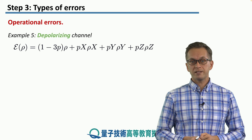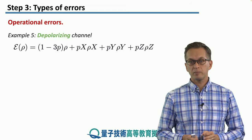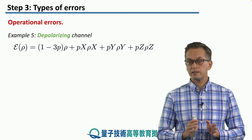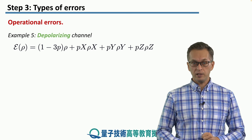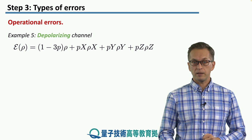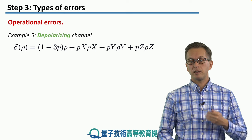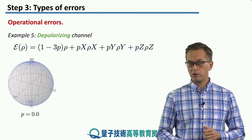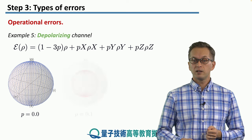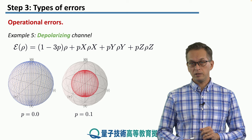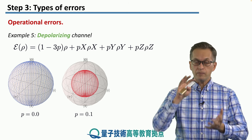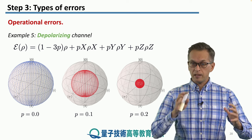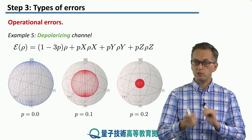For our fifth example, let's consider the depolarizing channel, which is particularly important in quantum communications. Here we assume we can have X errors, Y errors, and Z errors, all occurring with the same probability p. None of the states are impervious to this noise — all of them get squished towards the center of the Bloch sphere. Increasing the strength of the depolarizing noise, the ball gets even smaller and all states concentrate towards the center. All of these channels are known as Pauli channels, because all we need to describe them are Pauli matrices.